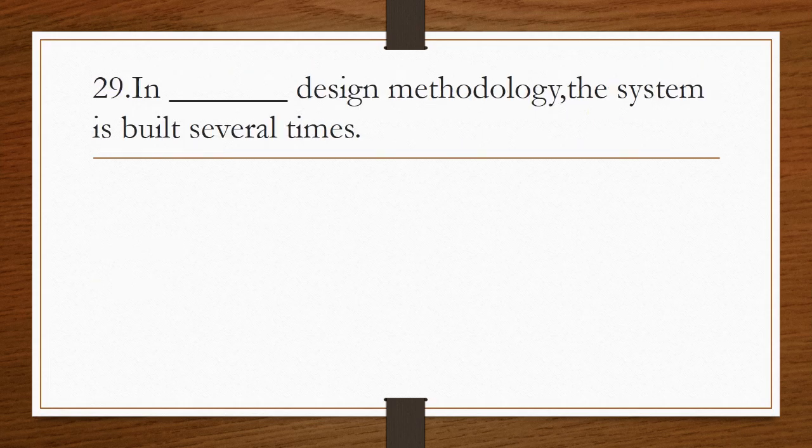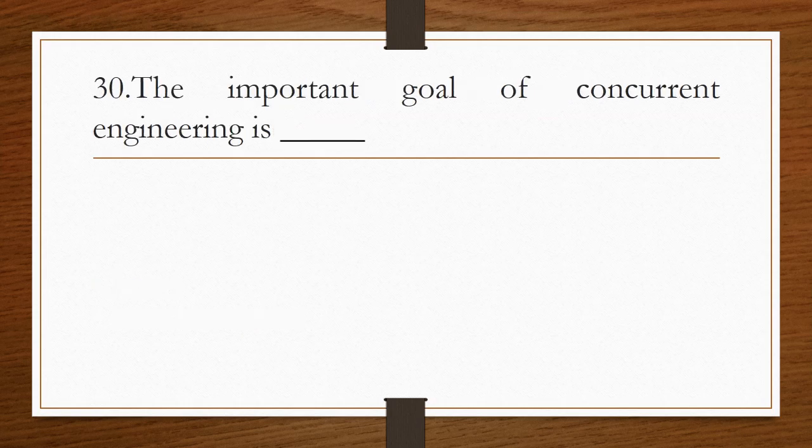In blank design methodology, the system is built several times. Answer is successive refinement methodology. The important goal of concurrent engineering is reduced design time.